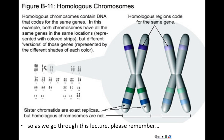As we go through this lecture, please keep in mind the things we've already covered. After DNA replication, sister chromatids are identical and held together — we don't think of those as two separate alleles. Homologous chromosomes are not identical. You get one member of a homologous chromosome pair from your mother and one from your father. They may contain the same alleles, but they don't necessarily have to. Sister chromatids are the result of DNA replication; homologous chromosomes are the result of sexual reproduction. When we talk about two alleles — one from mom, one from dad — we're talking about the homologous chromosomes, not the sister chromatids.